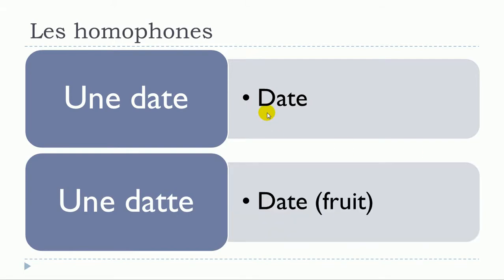It's quite interesting because in English it's written the same way. In that case we're talking about the fruit, so une datte. And here, une date - 31 janvier for instance.